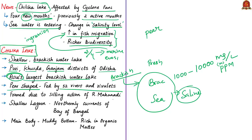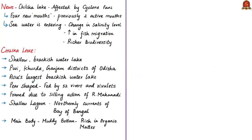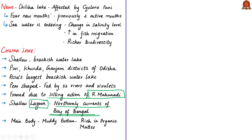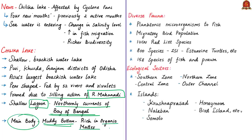The lake was formed due to the silting action of the Mahanadi River, which drains into the northern end of the lake. It is also a shallow lagoon formed due to northerly currents in the Bay of Bengal, which created a sandbar along the eastern shore. A lagoon is a shallow water body that may have an opening to a larger body of water but is protected from it by a sandbar or a coral reef. The lake is divided into an outer channel with a narrow neck leading into the sea, and the main body of the lake has a muddy bottom rich in organic matter.